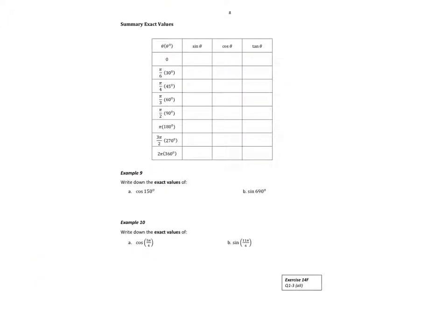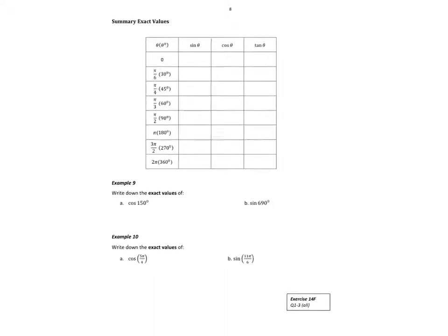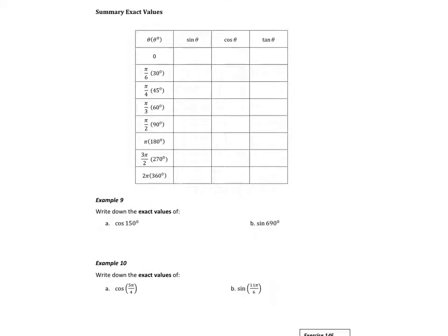Either this table or the diagram on the front of your booklet—fill this table in. For 30 degrees: sine 30° is 1/2, cos 30° is √3/2, tan 30° is 1/√3.